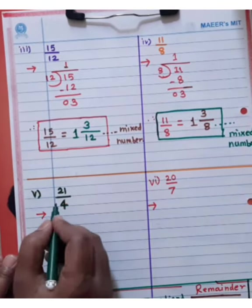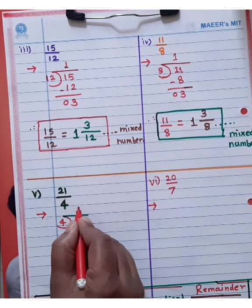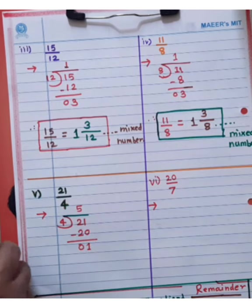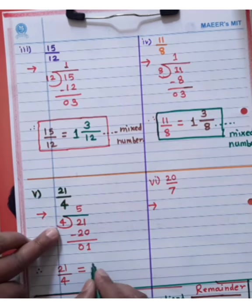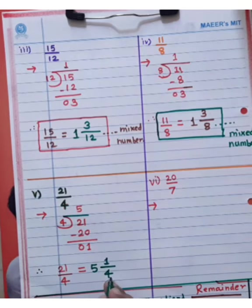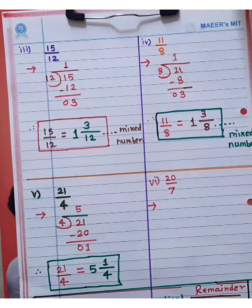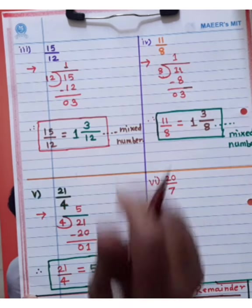Then fifth example. 21 divided by 4. 4 fives are 20, with only remainder 1. So 21 divided by 4 is equal to quotient 5, remainder 1, divisor 4. So 5 and 1/4 is the mixed number. You can convert to the mixed number.